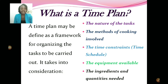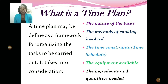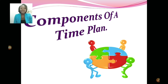It takes into consideration: the nature of the task — for instance, your SBA question; the methods of cooking involved — is it a three-course meal, and what cooking methods will you use? Good examples include frying, sautéing, and baking. It also includes time constraints — you have only two and a half hours for your practical assignment — as well as the equipment available and the ingredients and quantities needed.